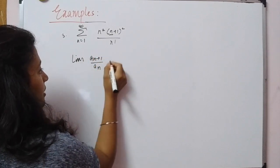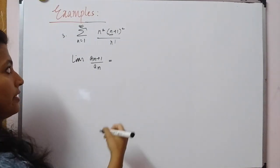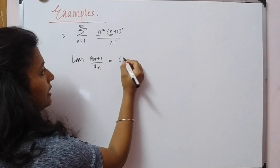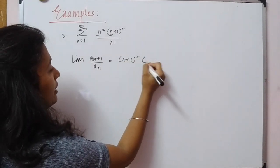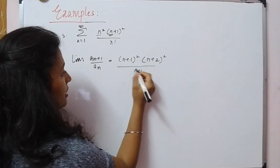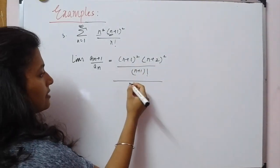Limit aₙ₊₁/aₙ. This is what we have to follow, the same algorithm. Now let's see what aₙ₊₁ is. We replace n by n+1 and get (n+1)²(n+2)²/(n+1)!, with n² and n! remaining.